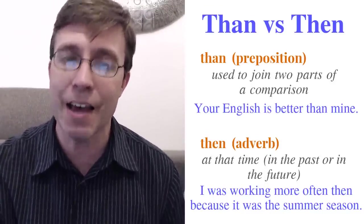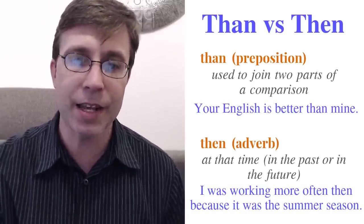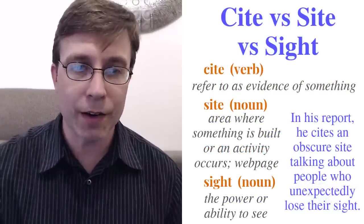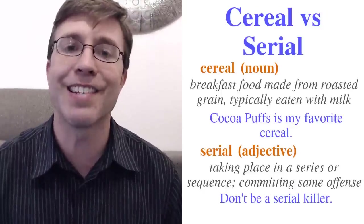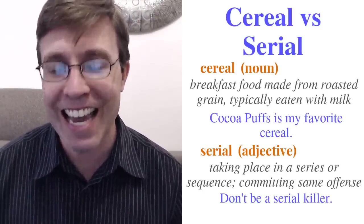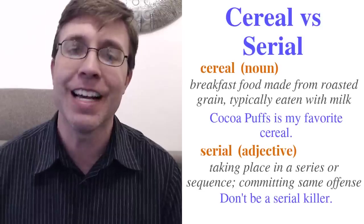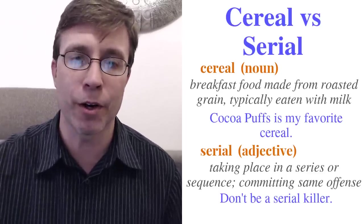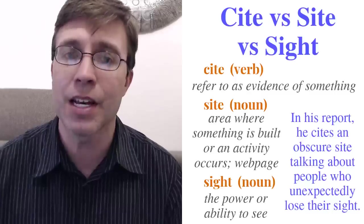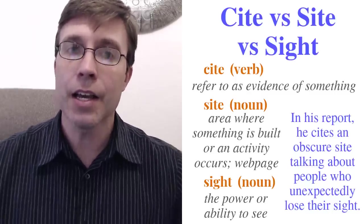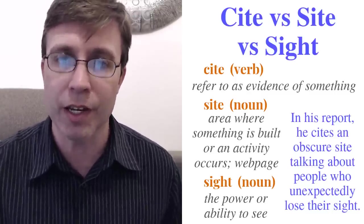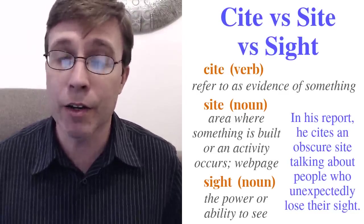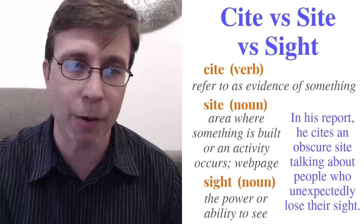We also talked about cereal versus serial: cereal, C-E-R-E-A-L, is the breakfast food; serial, S-E-R-I-A-L, refers to a sequence or committing the same offense repeatedly. And finally the three homonyms: cite, C-I-T-E, is a verb meaning to give reference to something — cite your sources; site, S-I-T-E, is a noun for an area where you build something or a webpage; and sight, S-I-G-H-T, is talking about the power to see.